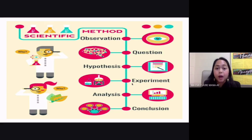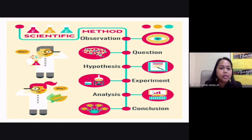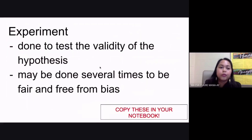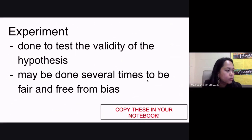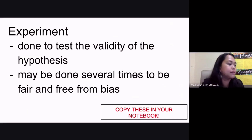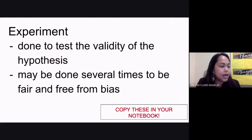Now, when you say experimentation, the main purpose is to check whether your hypothesis is valid or correct. We do experimentation to test the validity of your hypothesis. This may be done several times to be fair and so that your results are free from bias.